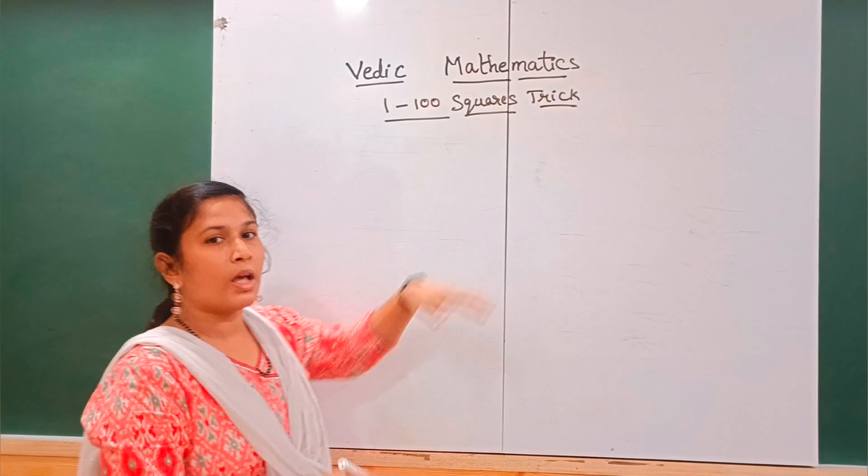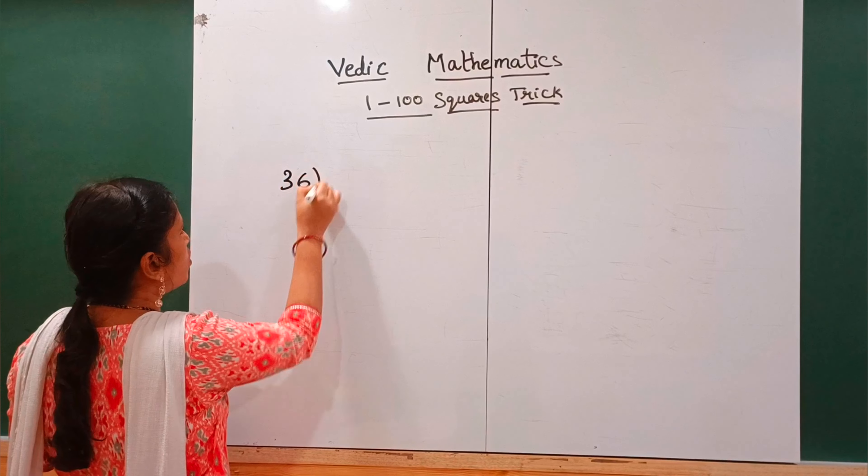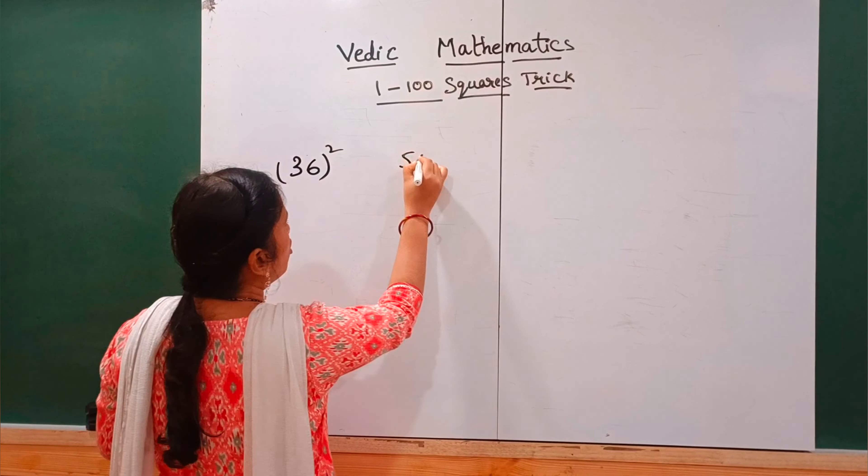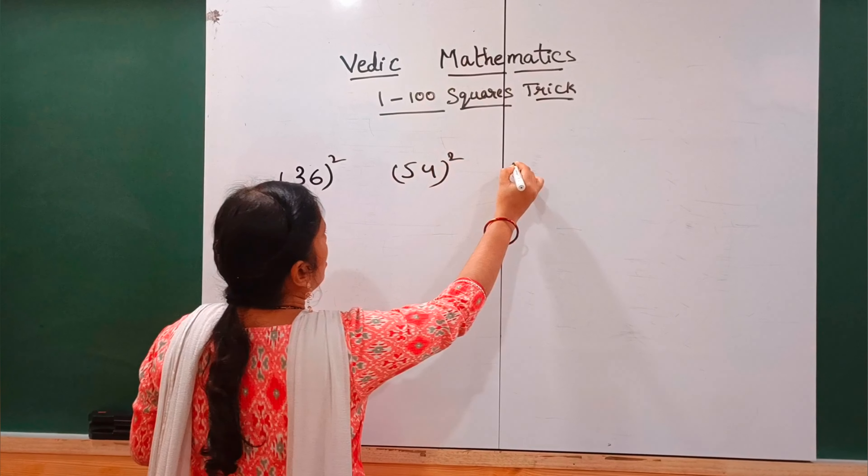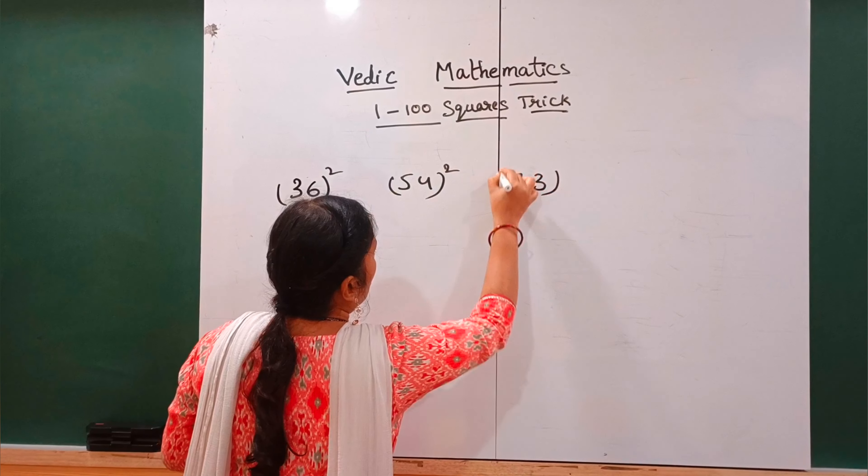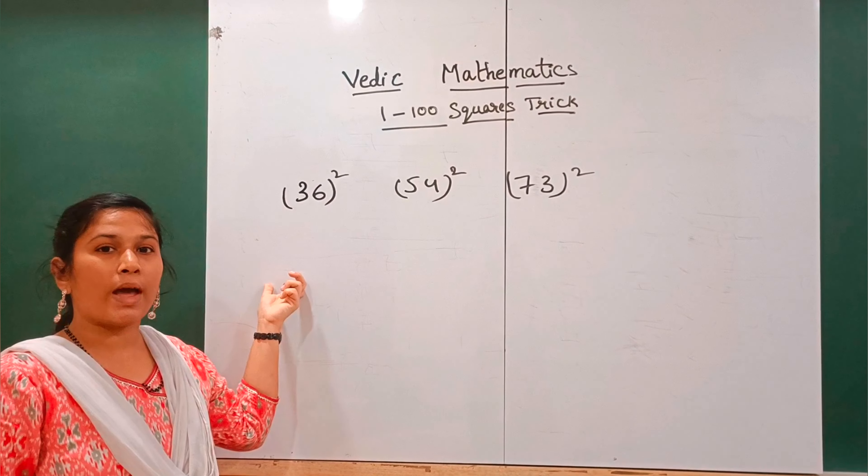I am going to show you with random numbers like 36 whole square, 54 whole square, 73 whole square. I am going to show you how to find these square values.